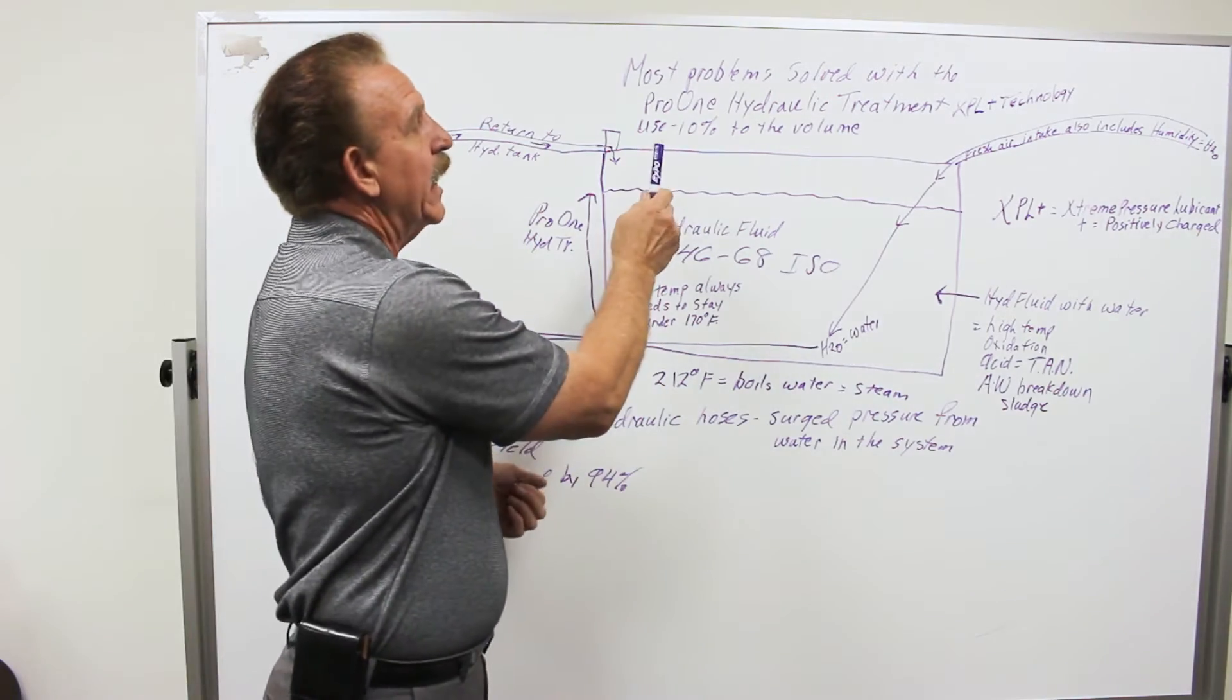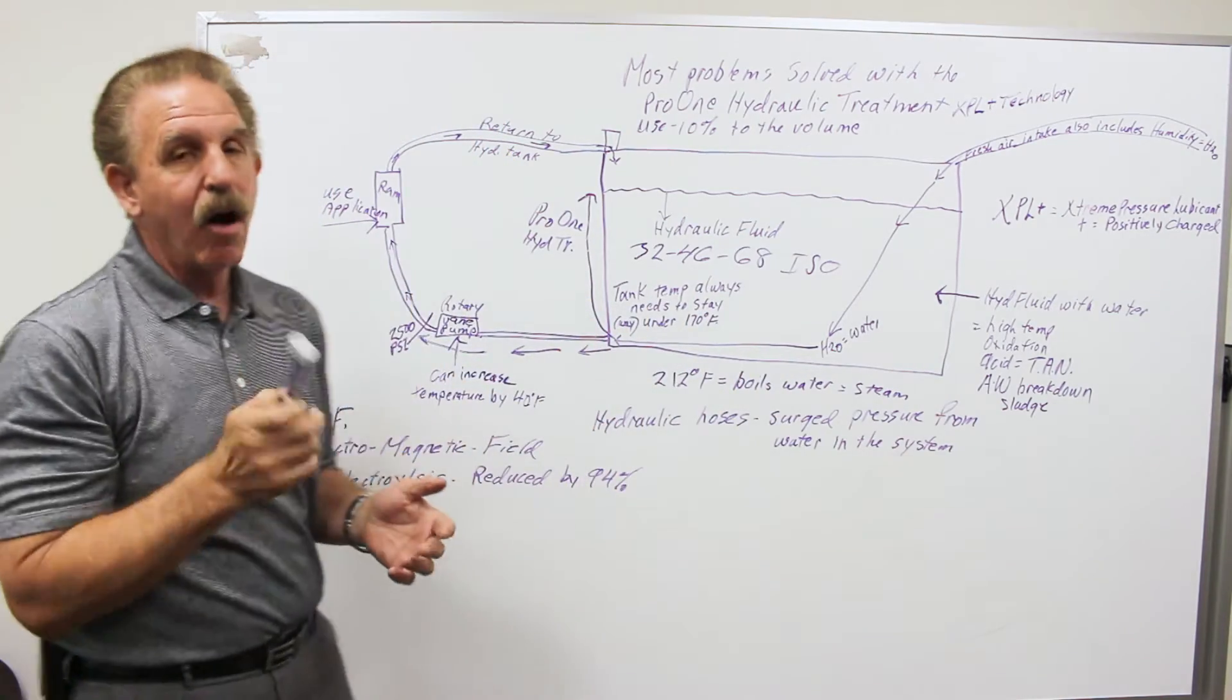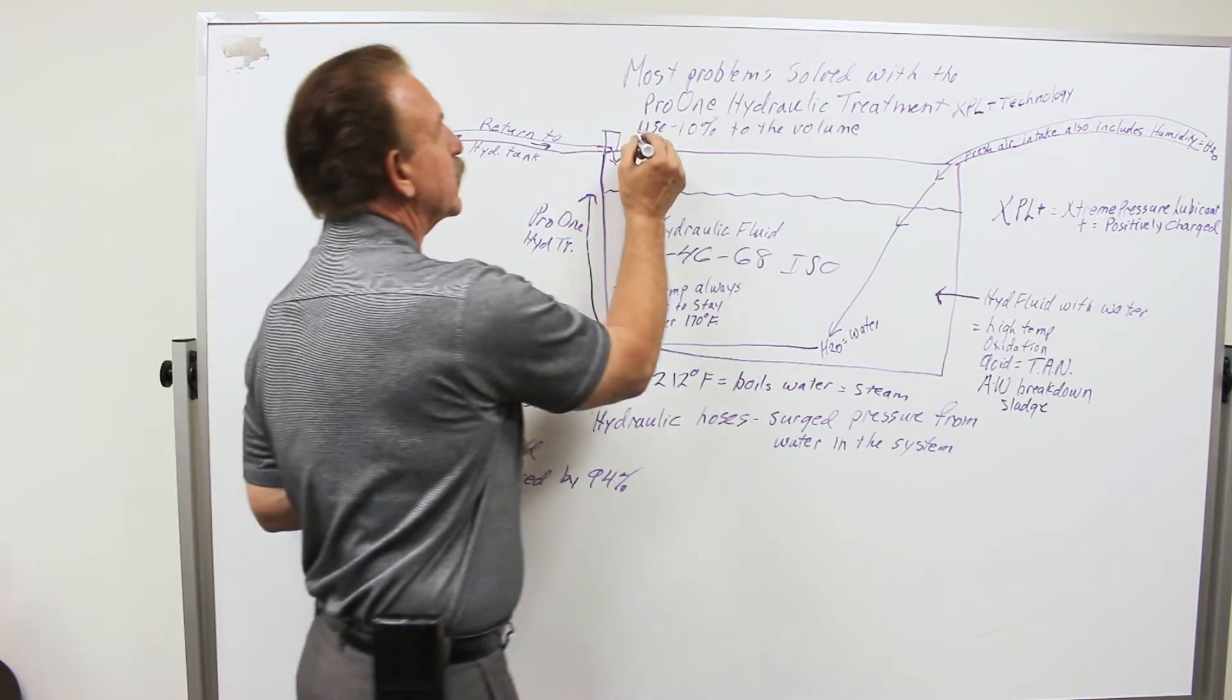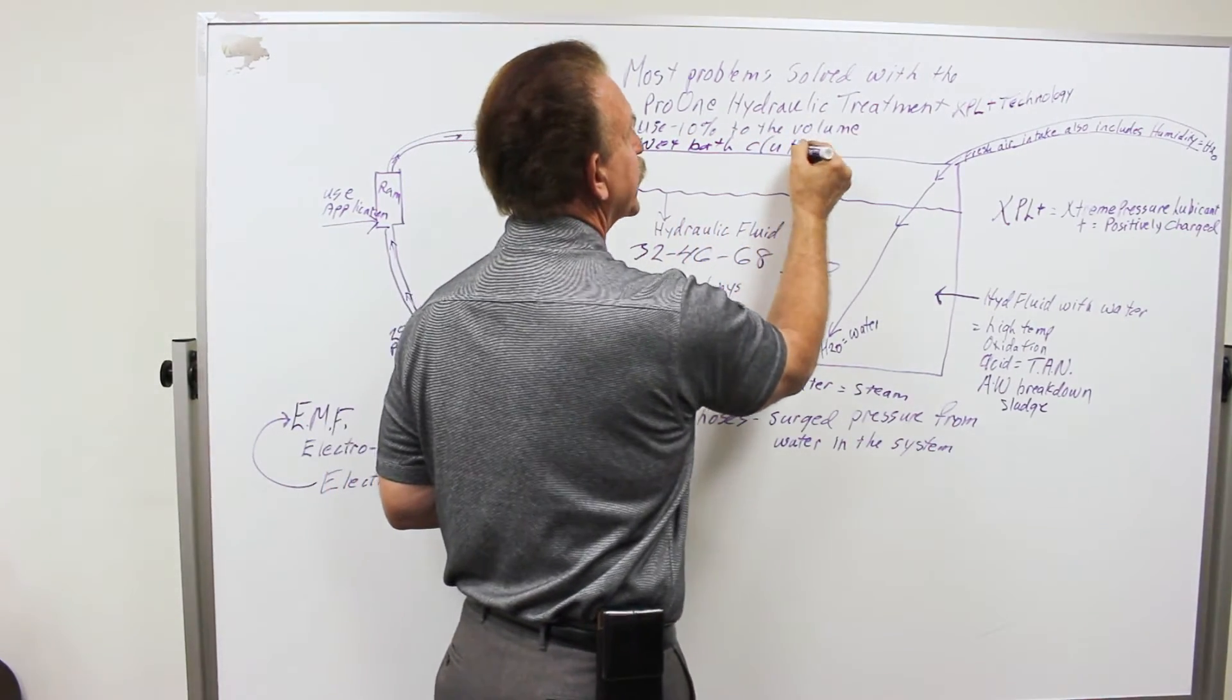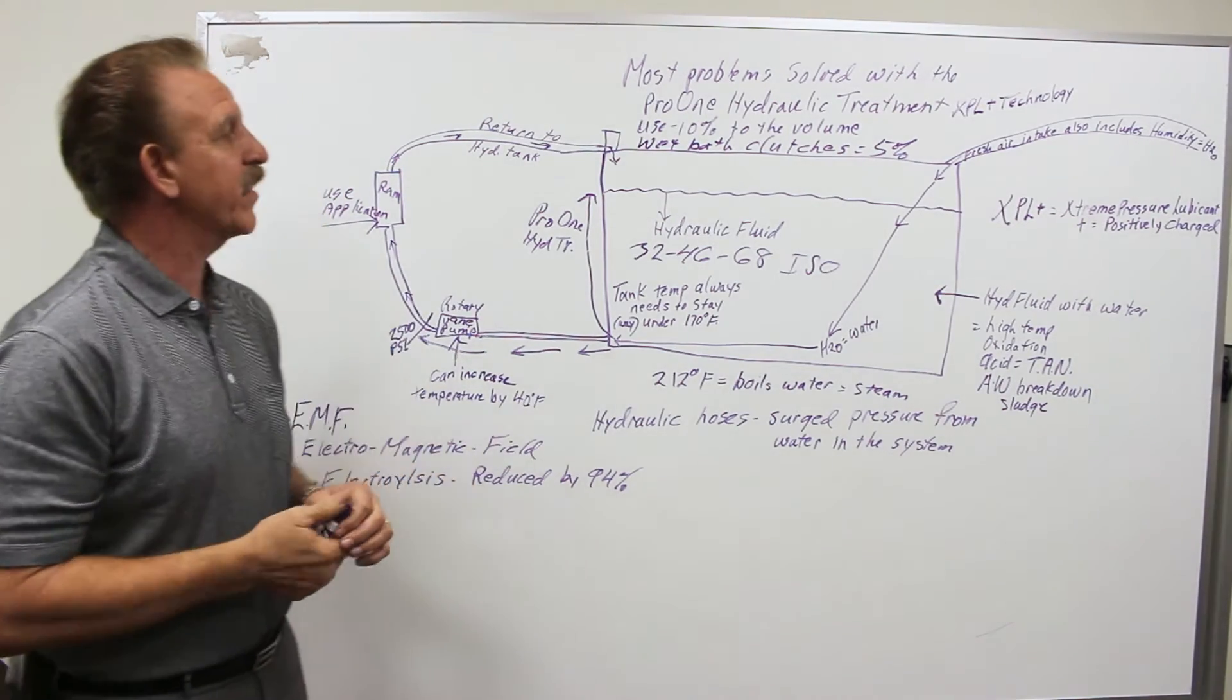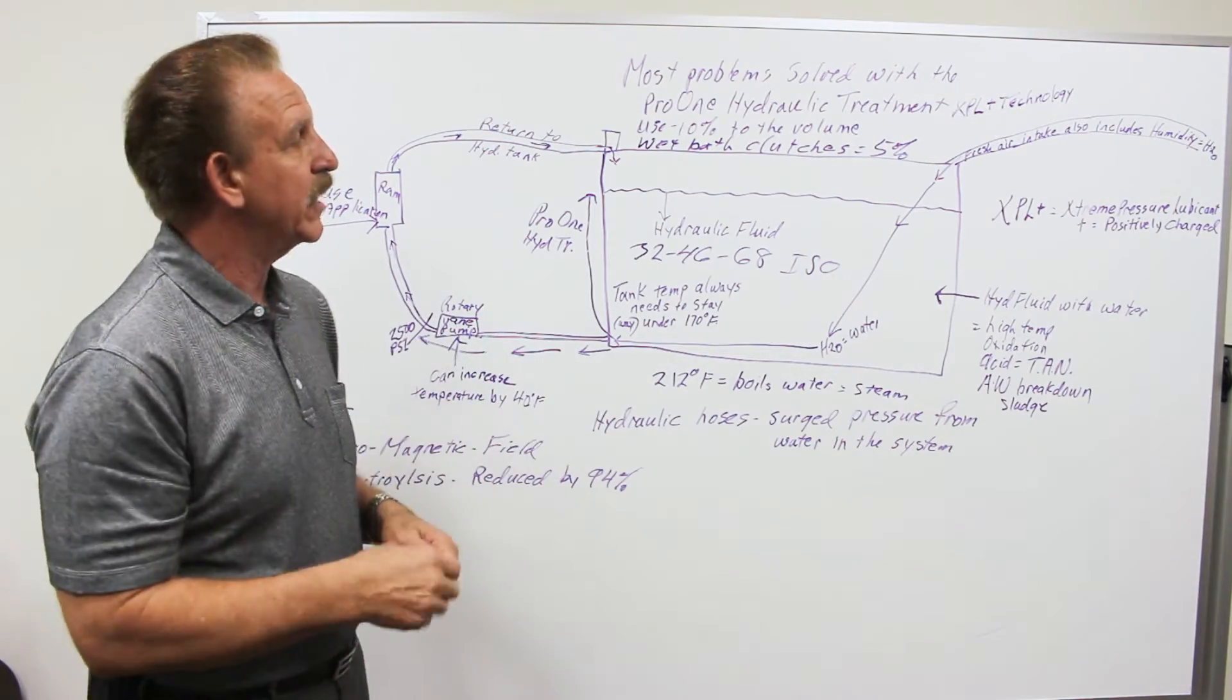Now, how do you use it? You're going to use it at 10% to the volume. That's providing in this hydraulic system and whatever the applications, as long as it's not dealing with wet bath clutches. If they're in a wet bath clutch application, we want to stay at 5%. So wet bath clutches equal 5% instead of 10%. And it works very well with wet bath clutches. There's a lot of application - cranes are one of them, earth movers and so on that have wet bath clutches and brakes also.